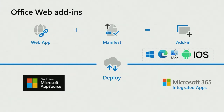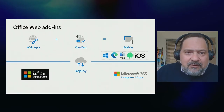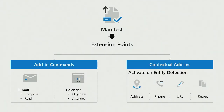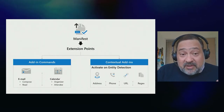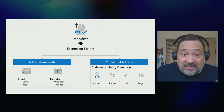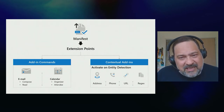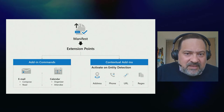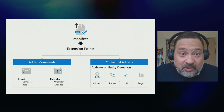Another key aspect of web add-ins is that we provide a JavaScript API known as Office.js that you can use to interact with different products — in this case Outlook. The manifest is a file that describes how your add-in is going to behave inside Outlook. You define extension points — basically whether your add-in shows up when you're creating an email, reading emails, organizing a meeting, or attending an appointment. Your extension points can also be contextual add-ins, which activate on reading and can trigger if you detect an address, phone number, URL, or regular expression in your email.